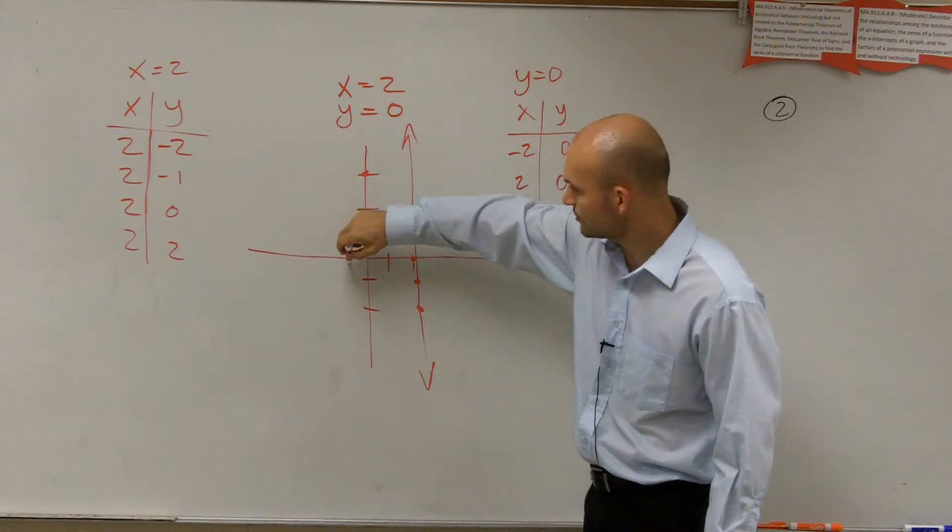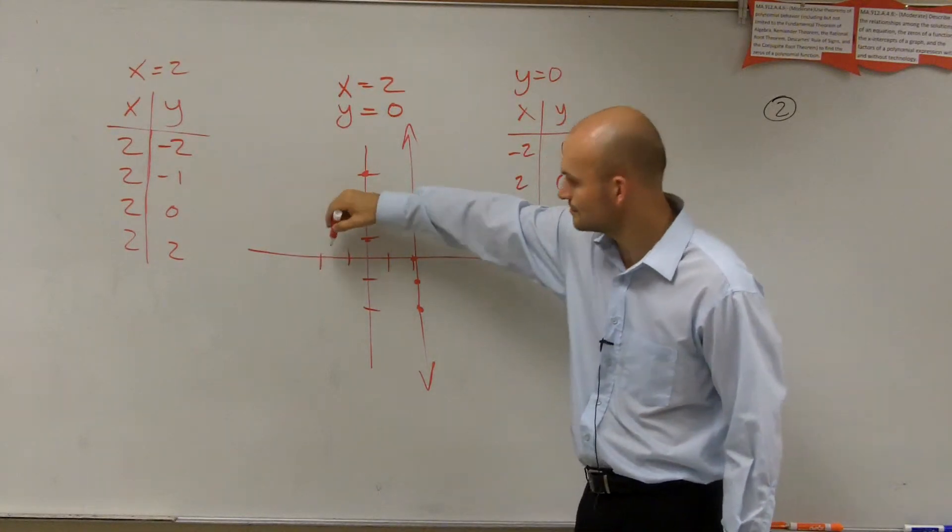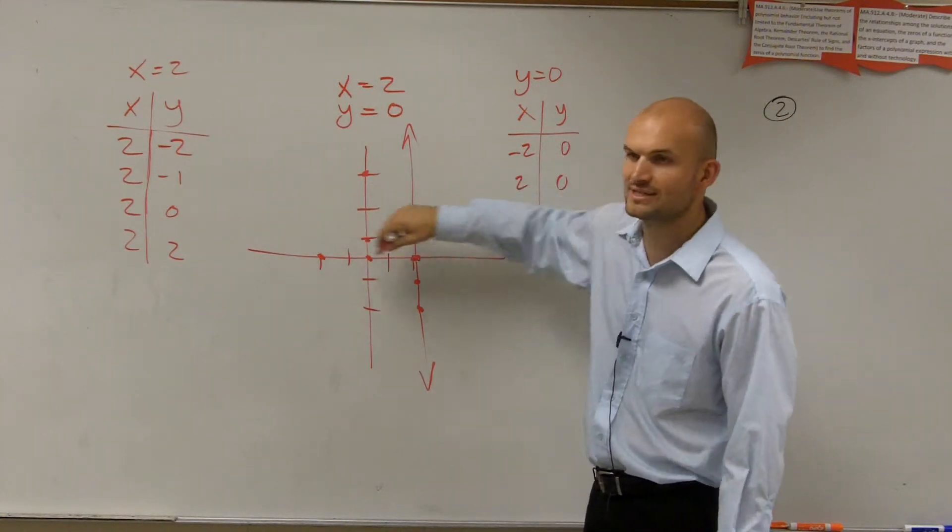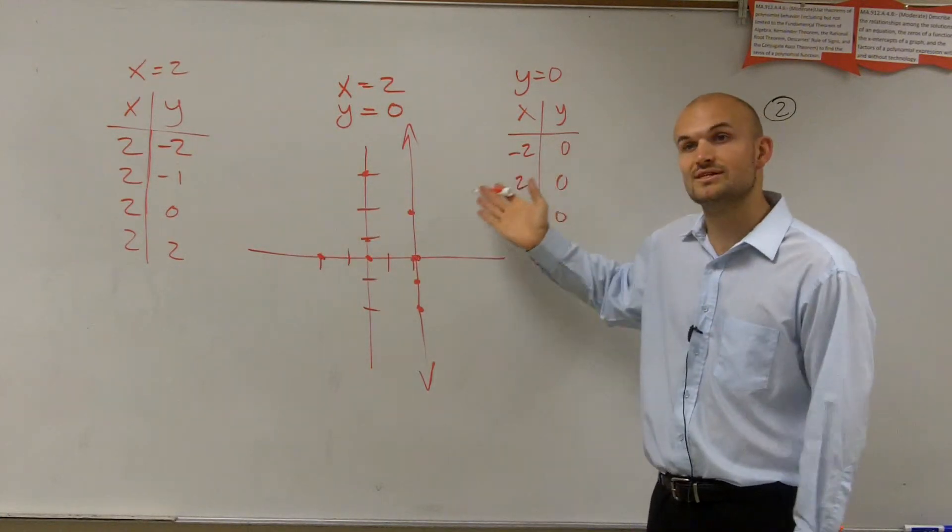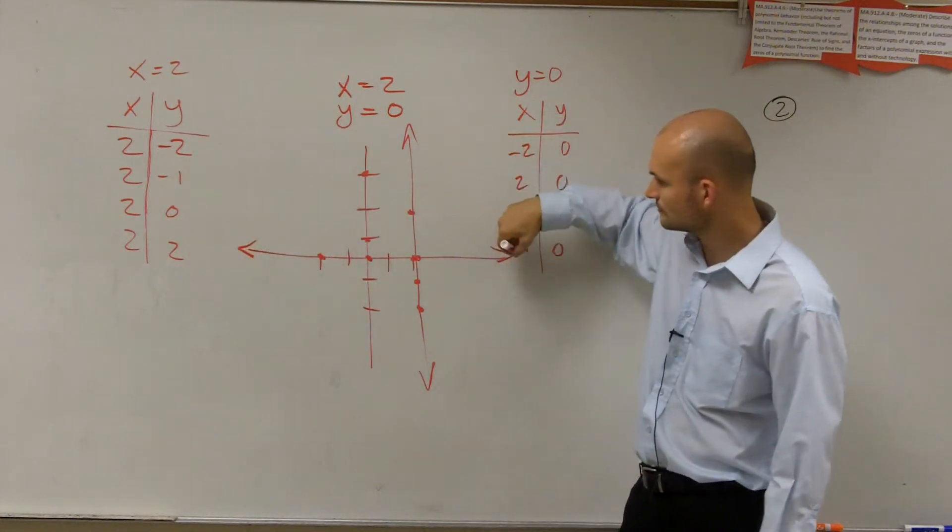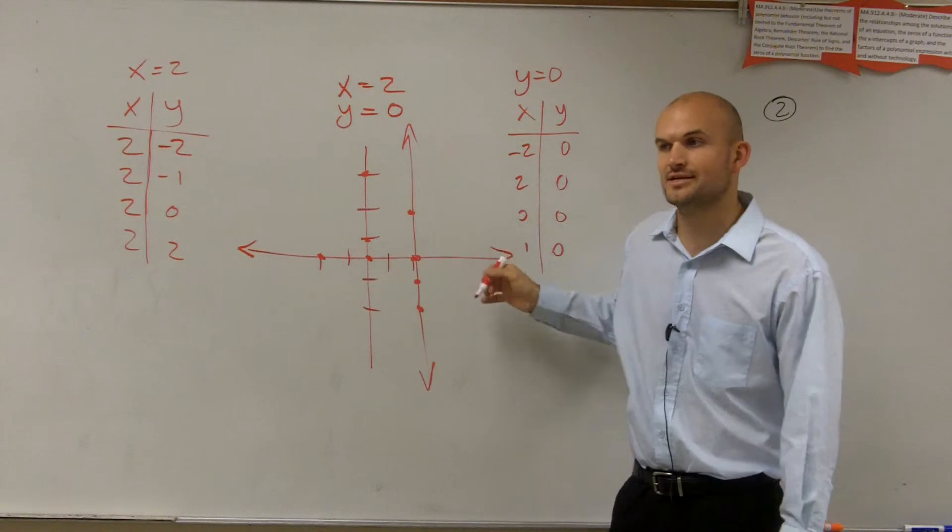At negative 2, what is y equal? 0. At 2, what is y equal? 0. It always equals 0. So y equals 0 is actually the graph of the x-intercept, all right? So it's going to be a line along the x-intercept.